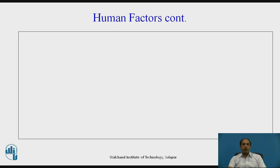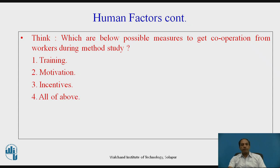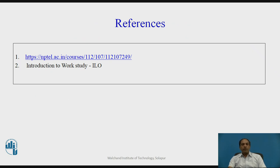Jobs which lead to a higher level of material handling can also be considered under human factors. Now, think about which are the possible measures to get cooperation from workers during method study. The answer is all of the above — training, motivation, and incentives are all important for correct and good cooperation from workers. Workers' cooperation is most important; without human factor cooperation, we are unable to get success. There are many examples where technical and economic considerations are very strong, but human factor resistance means the method study cannot succeed. Thank you.